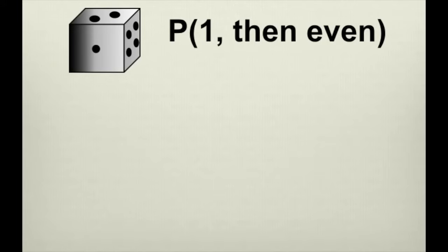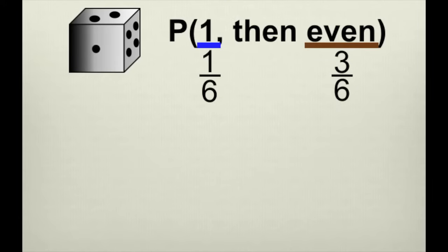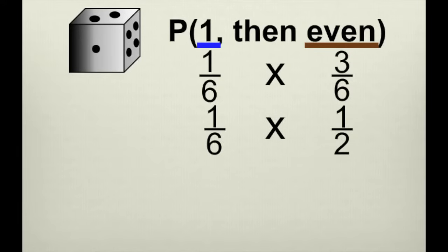Now let's talk about a standard number cube — you might hear it called a die or a number cube, either is fine. We have two events: the first is the probability of rolling a one, which is one-sixth since there are six sides and only one has a one. The second event is landing on an even number. There are three even numbers — two, four, and six — so that's three out of six, which reduces to one-half. We multiply one-sixth times one-half and that gives us one-twelfth.